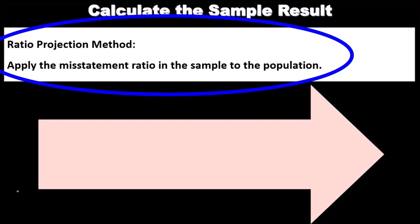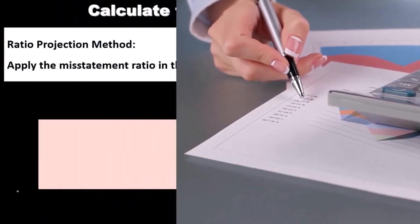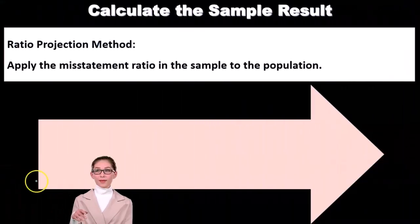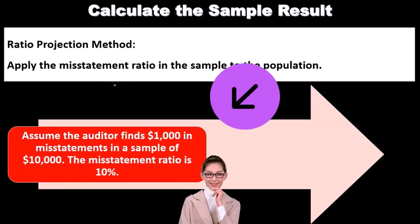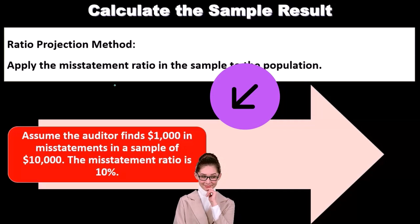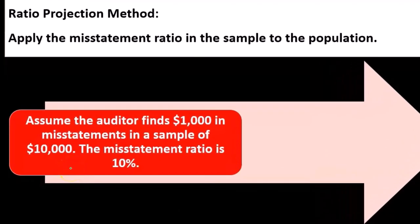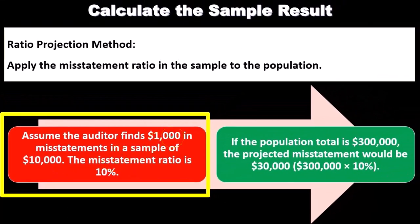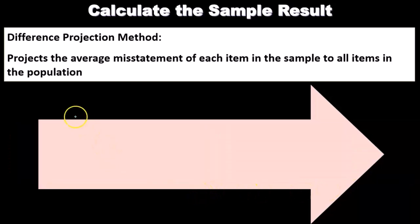We have two methods to calculate the sample results. The first is the ratio projection method, which applies the misstatement ratio found in the sample to the population. For example, assume the auditor finds a $1,000 misstatement in a sample of $10,000. The misstatement ratio is 1,000 over 10,000, or 10%. If the population totals $300,000, the projected misstatement would be $30,000 — that's $300,000 times 10%.